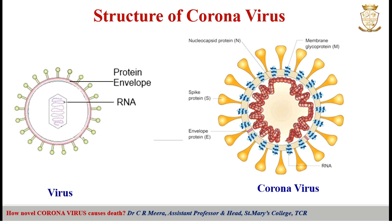These crown-like peplomers act as the key to get attached to host cells. Inner to this envelope is the protein core called the capsid, which is made up of capsomers. This capsid, or protein coat, protects the genetic material of the virus as it passes from one person to another. Inside this protein coat lies the genetic material of the virus, which is RNA — the most important part essential for its existence and multiplication. The genome plus protein core together are known as the nucleocapsid.